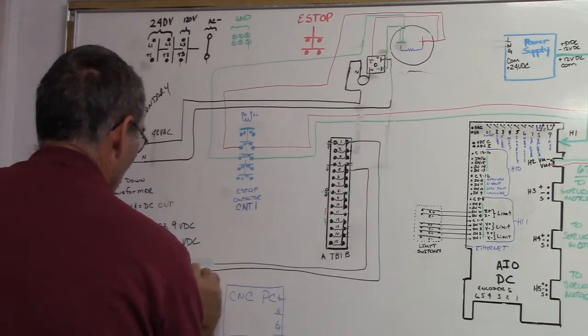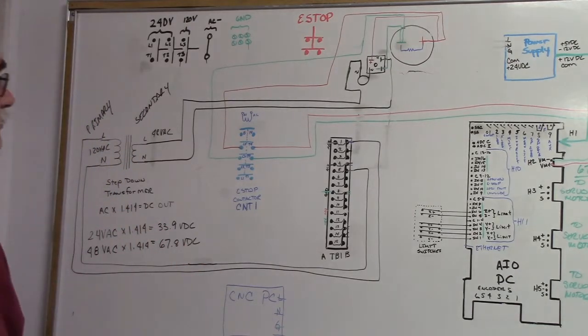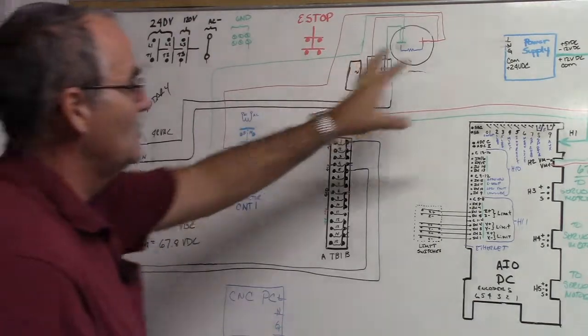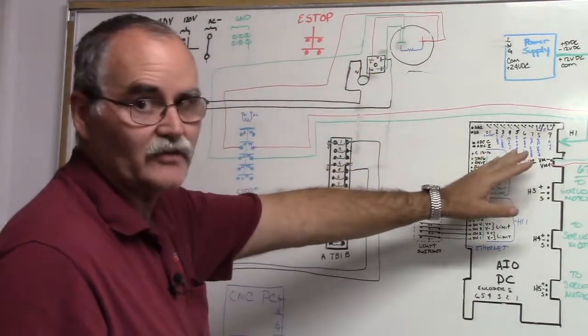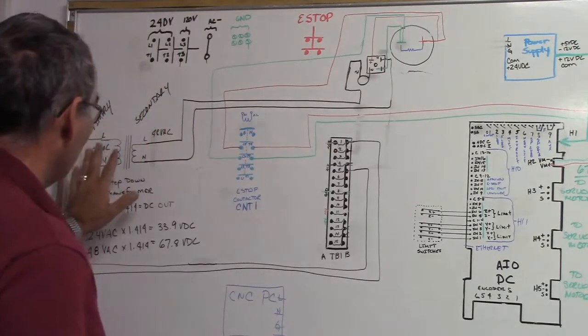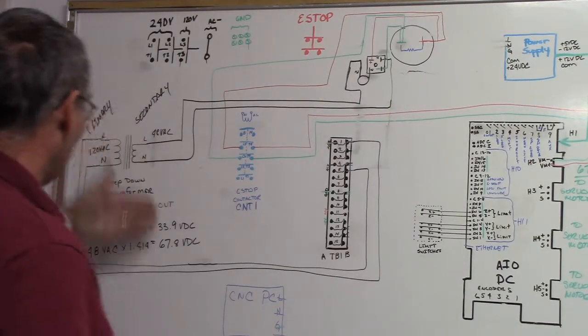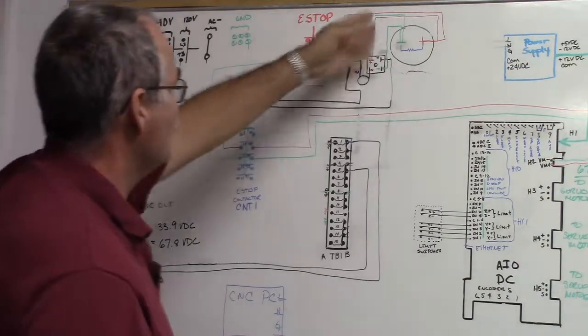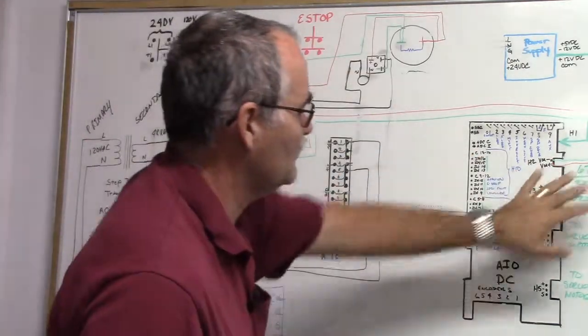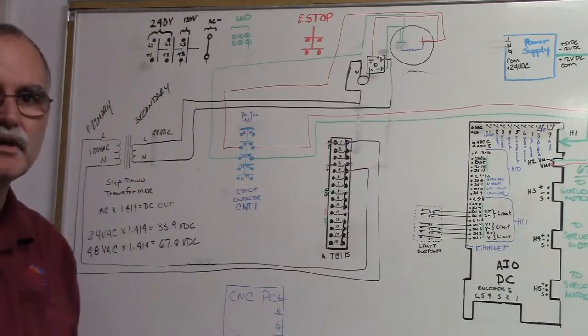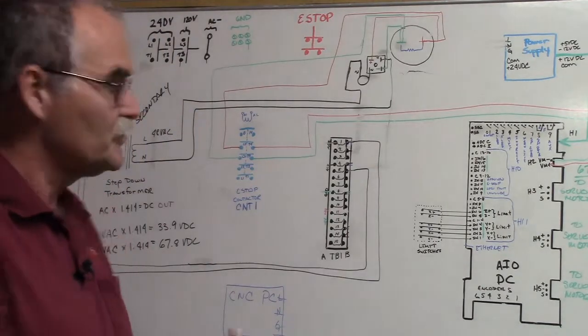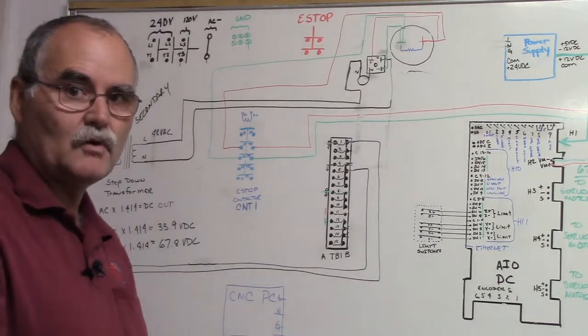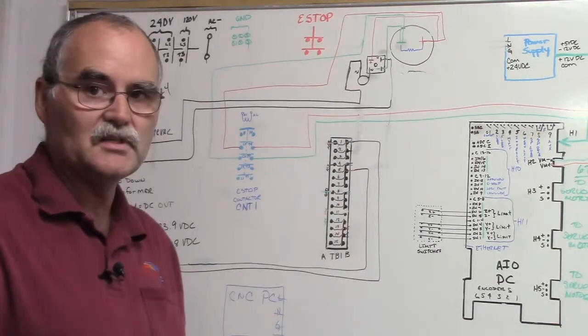So anyway, that covers rectifying our AC through the CNT1. We did it both ways. We went direct, direct rectification, and we also stepped it down here, and we used 48 volts, a step down transformer of 48 volts as an example. Went through rectification, went through our contactor, and we got 67.8 volts DC over at our all-in-one DC. So that covers stepping down or rectifying our AC voltage and getting it to the all-in-one DC.